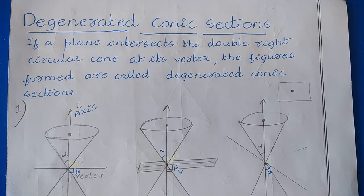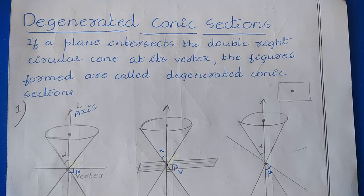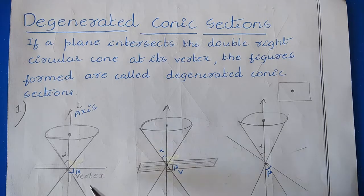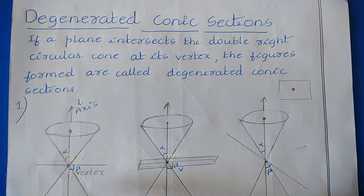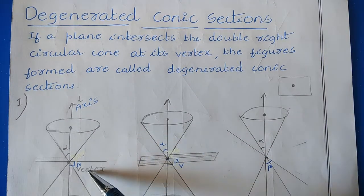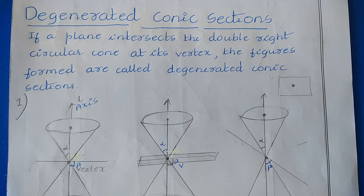In this video we will discuss conic sections, specifically degenerated conic sections. Please refer to the previous video on sections of a cone to understand this better. Here, degenerated conic section means we have a double right circular cone, and if the plane intersects it at its vertex, we get certain figures known as degenerated conic sections.